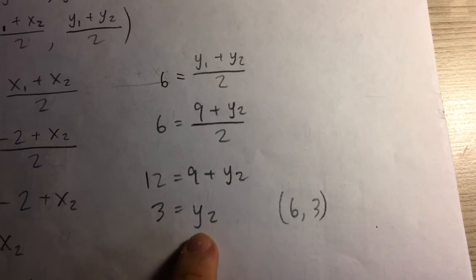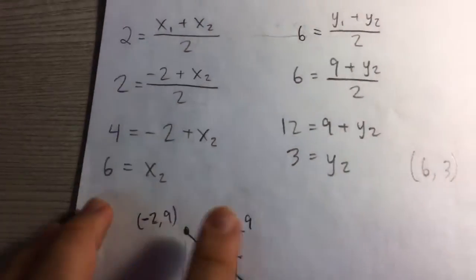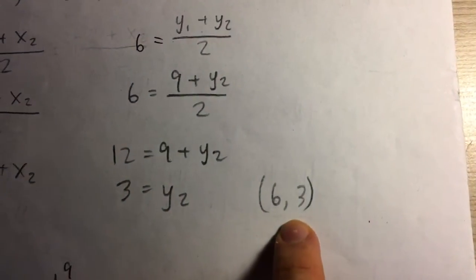So this means that the other endpoint has a y-coordinate of 3. And so (6, 3) is the other endpoint.